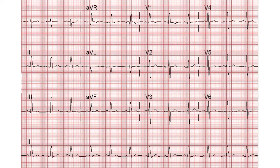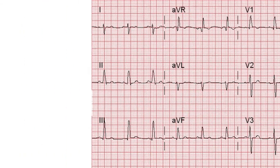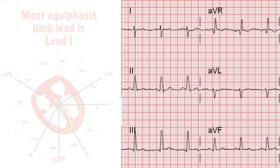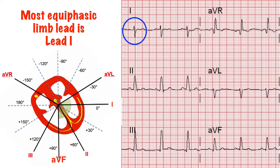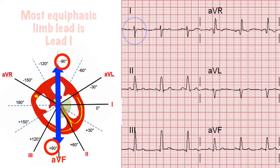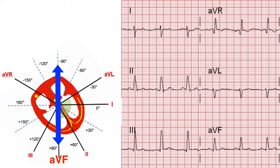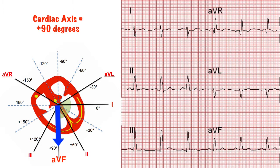Let's do that again with the 12-lead ECG. The most equiphasic lead is lead one, so the impulse must be travelling at 90 degrees to this, which means either plus or minus 90 degrees. Looking at the lead on this vector — lead AVF — we can see that the impulse is travelling towards it, therefore the cardiac axis must be plus 90 degrees, which is just about normal but close to right axis deviation.